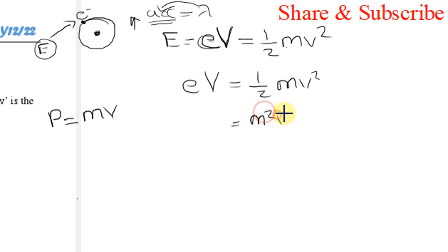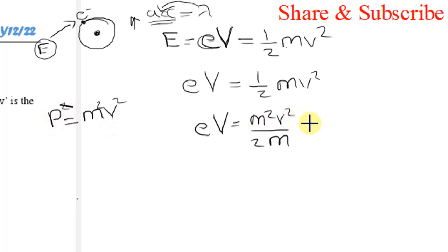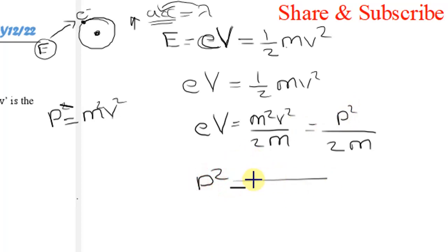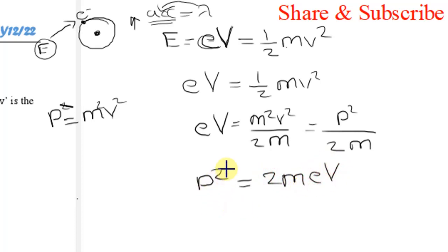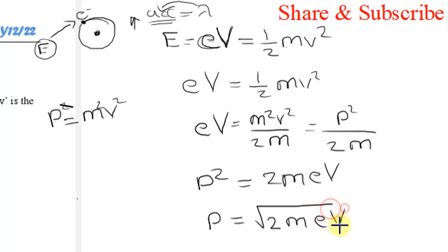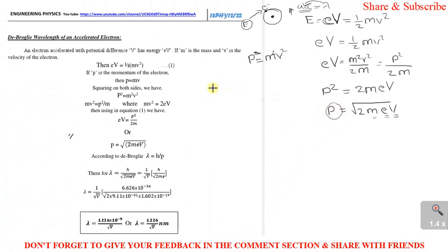So we write eV = m²v²/2m = p²/2m. Finding the momentum equation: p² = 2meV, and removing the square gives p = √(2meV), where m is the mass of the electron, e is the charge, and V is the voltage. This is the momentum term.